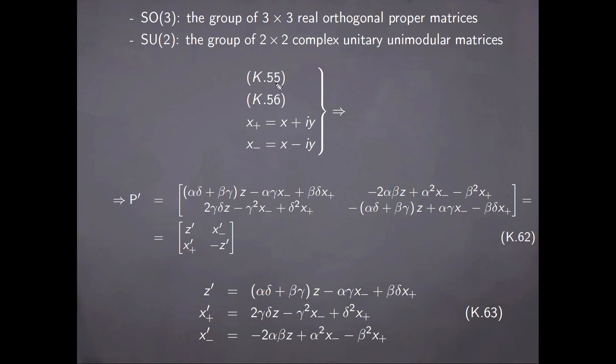Now, from results 55, 56, and using the definition here for these complex quantities, we can write the similarity transformation of P, so the matrix P prime that is obtained from applying the similarity transformation on P through the matrix Q. As given here, or in a more shorthand notation, the representation here, where each element is given by this sequence of equalities.